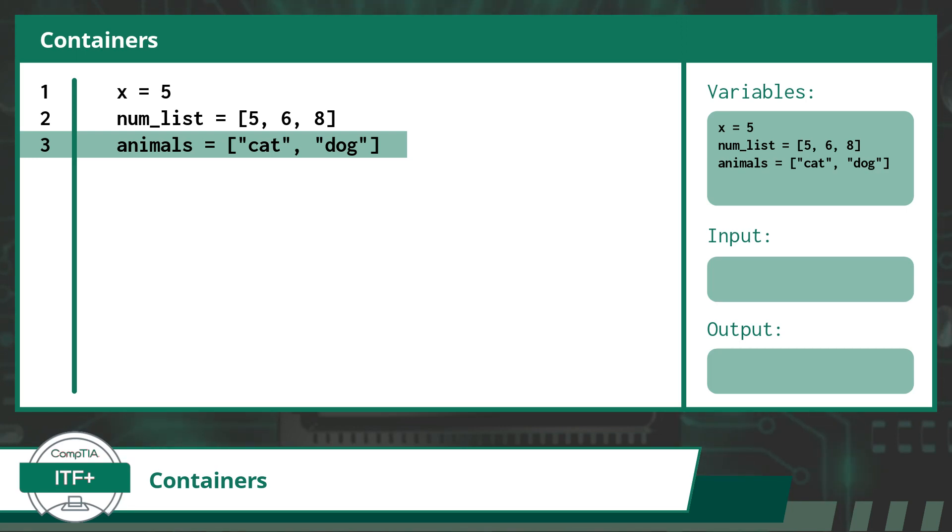So where do you use arrays and vectors outside of my example code? Well, just about any time a program needs to store a set of values. This could include storing a list of items like the months of the year, or collection of data like a list of strings containing customer names. And there you have it, the basics of containers with regards to computer programming.